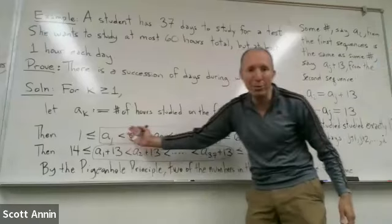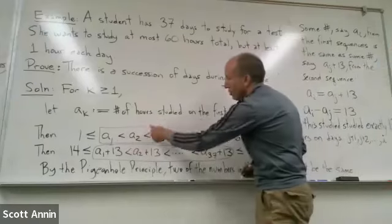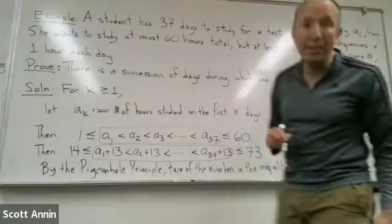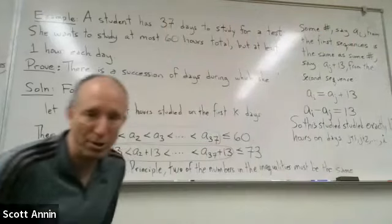So the numbers are getting strictly larger as we go. So if we subtract a_i minus a_j and get 13, that actually means that i has to be bigger than j.